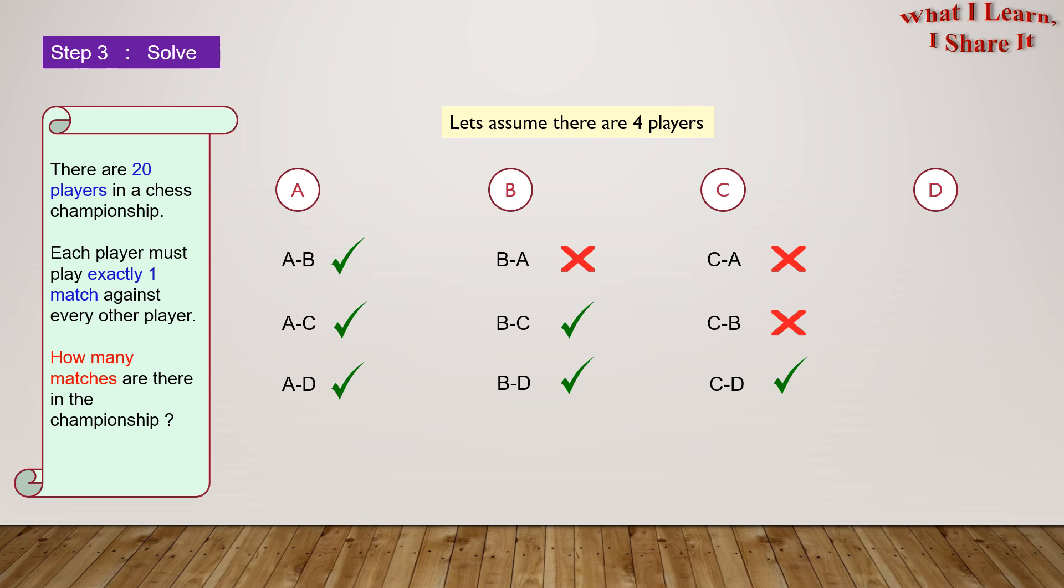So in the same way, here are the possible combinations for player D: D-A, D-B, and D-C. Player D has already played with player A, player B, and player C, so we can't consider any of its combinations. So the possible number of combinations for four players equals 3 plus 2 plus 1 equals 6.